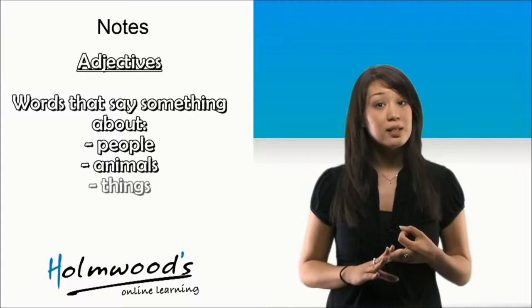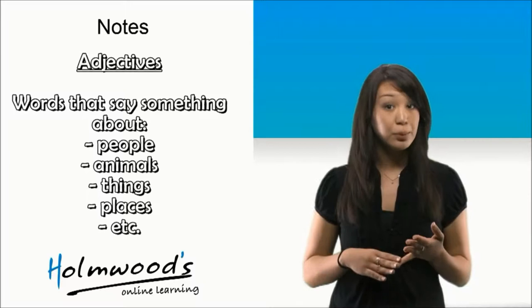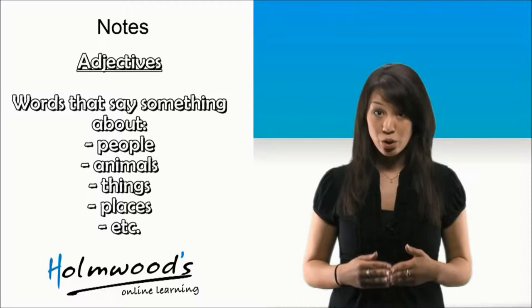These words like people, animals, and things are called nouns. So, adjectives are words that describe nouns.